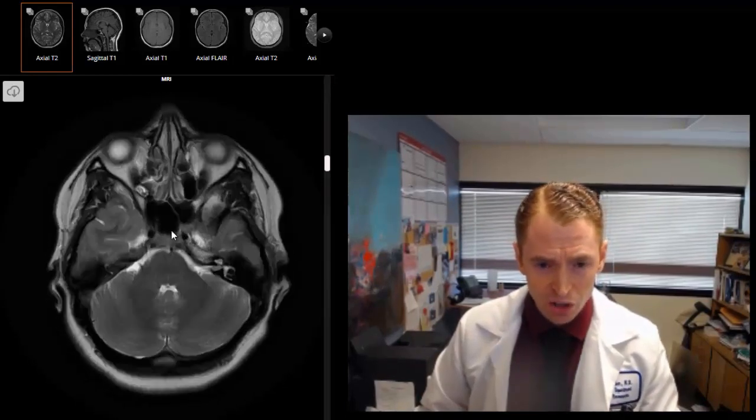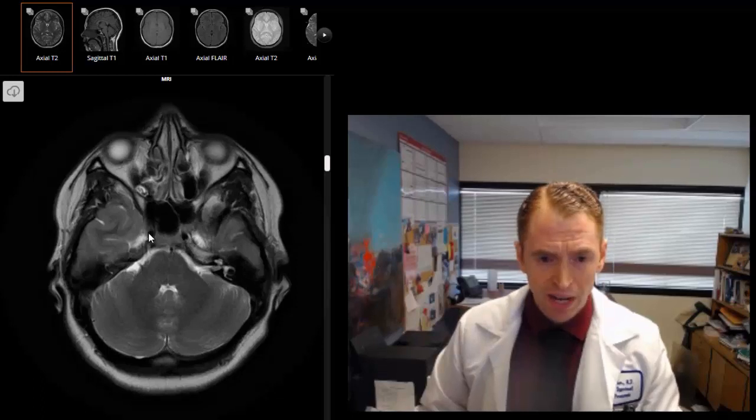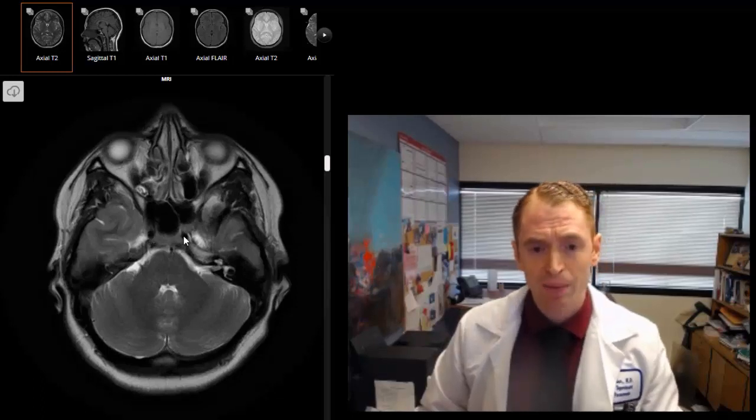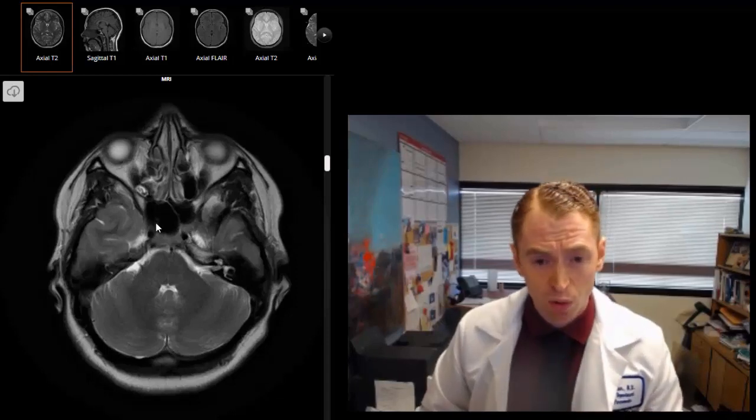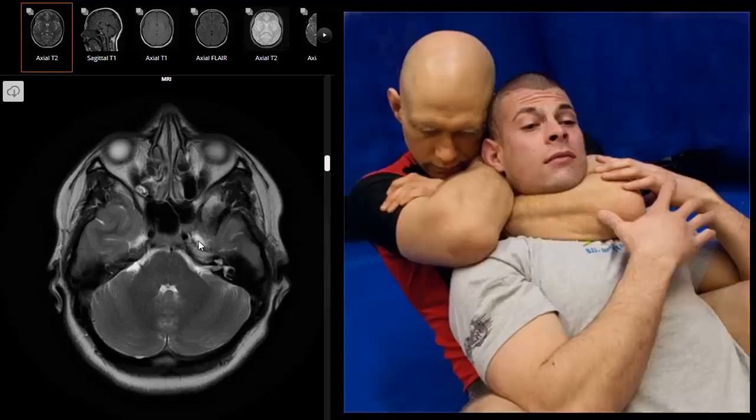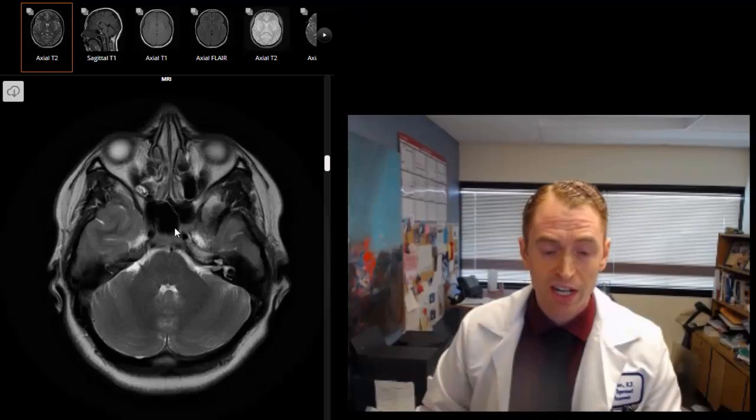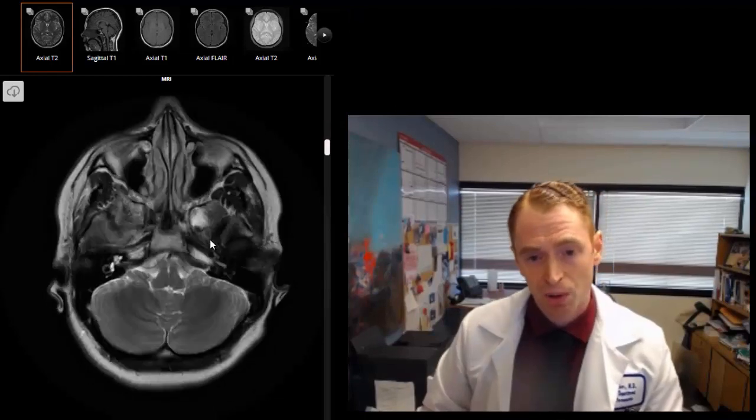These are the internal carotid arteries. These derive from the common carotid arteries where you feel your pulse in your neck. In martial arts, if someone performs a vascular choke hold like a rear naked choke, the common carotid arteries are compressed, so no blood flows to these internal carotid arteries, and your opponent could pass out.